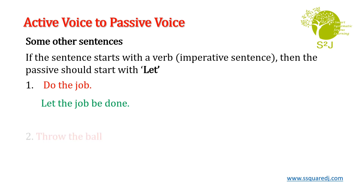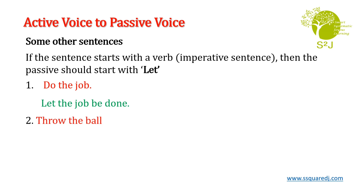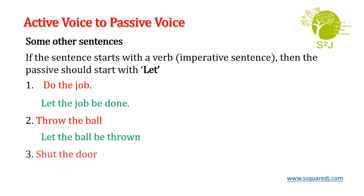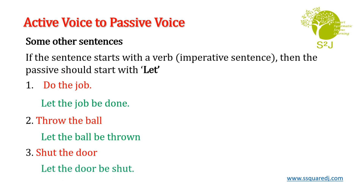Imperative sentences are sentences which are like commands, requests, or permissions. Second example: 'Throw the ball.' Passive voice is: 'Let the ball be thrown.' Here, we are adding the word 'be' and changing the verb to past participle. Third: 'Shut the door.' → 'Let the door be shut.' So imperative sentences should be changed into passive voice by using the word 'let' at the beginning.